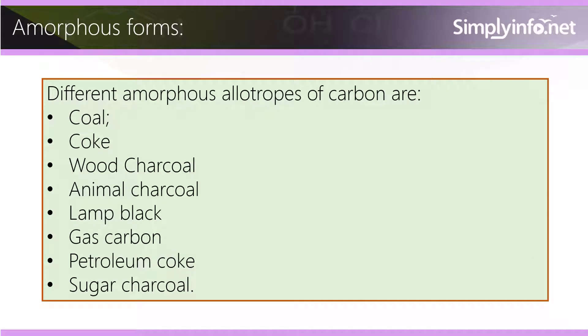The different amorphous allotrophs of Carbon are: coal, coke, wood charcoal, animal charcoal, lamp black, gas carbon, petroleum coke, and sugar charcoal.